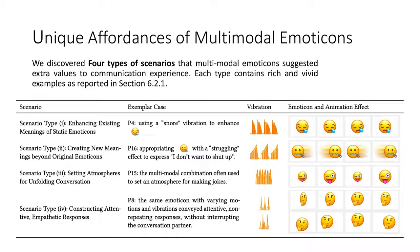We identified four typical scenarios for multi-modal emoticon value. First, enhancing existing meaning — for example, using a snore-like vibration and slight scrolling motion to enhance a sleeping emoticon. Second, creating a brand new meaning — a shaking head motion with vibrations on a zip emoticon can express a completely opposite meaning. Third, setting the atmosphere for a conversation session, such as using a group of multi-modal emoticons to set a joking tone. Fourth, constructing attentive and empathetic responses — using the same emoticon with different vibration and motion combinations to convey attentiveness without interruption.